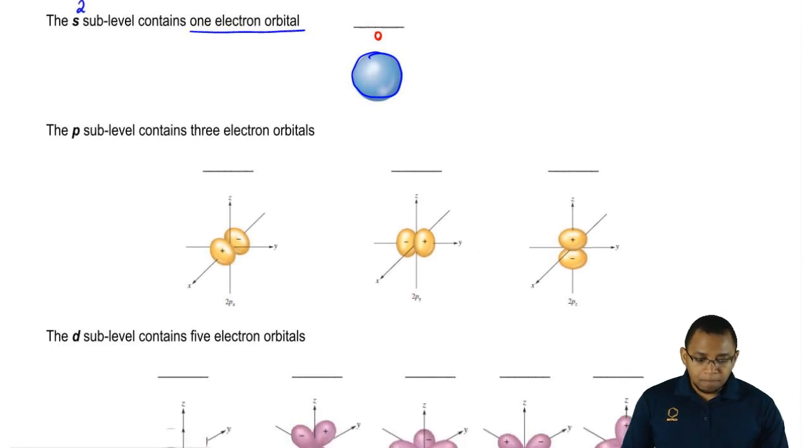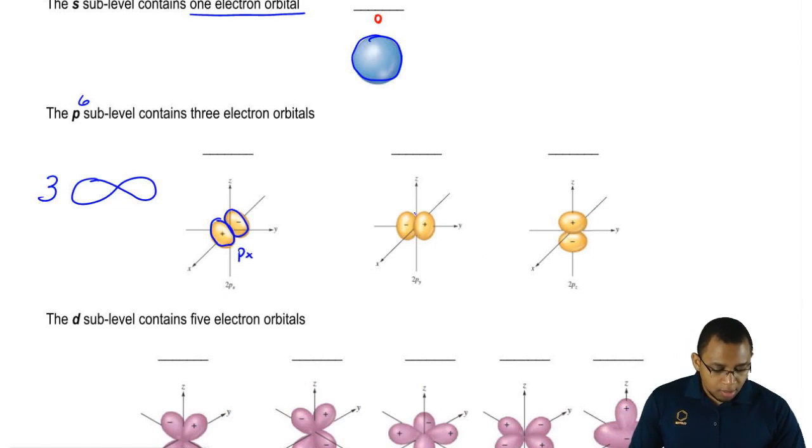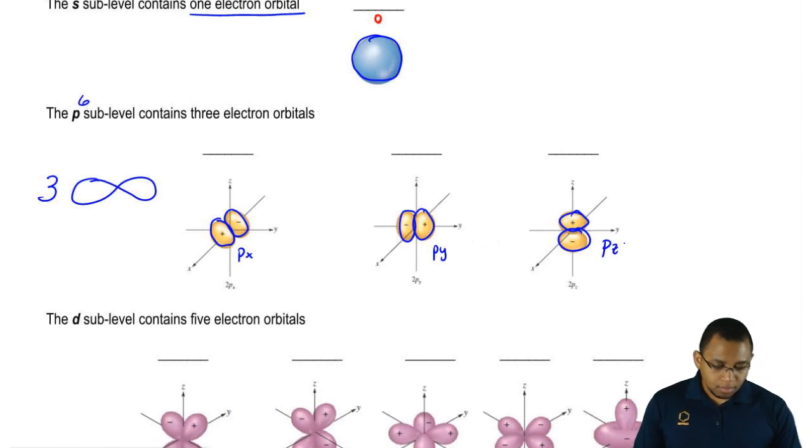When we move over to P, P has three electron orbitals. Each one can hold a maximum of two electrons, so P can hold up to six electrons. Remember that P has unique shapes too - it has three dumbbells. Depending on which axis it's on, these dumbbells lie on the x-axis, so this would be Px. These are on the y, so these would be Py. These are on the z, so these would be Pz. Now remember, based on the M sub-L value, each of these electron orbitals has a number too: minus one, zero, plus one.